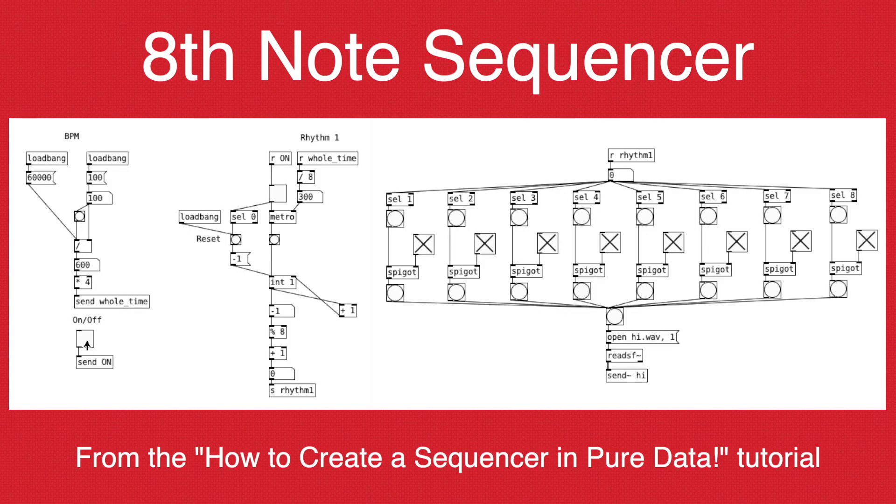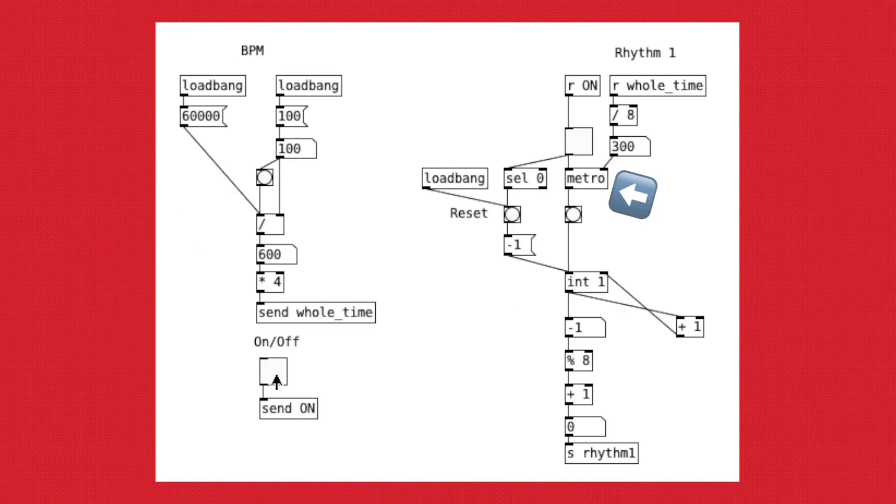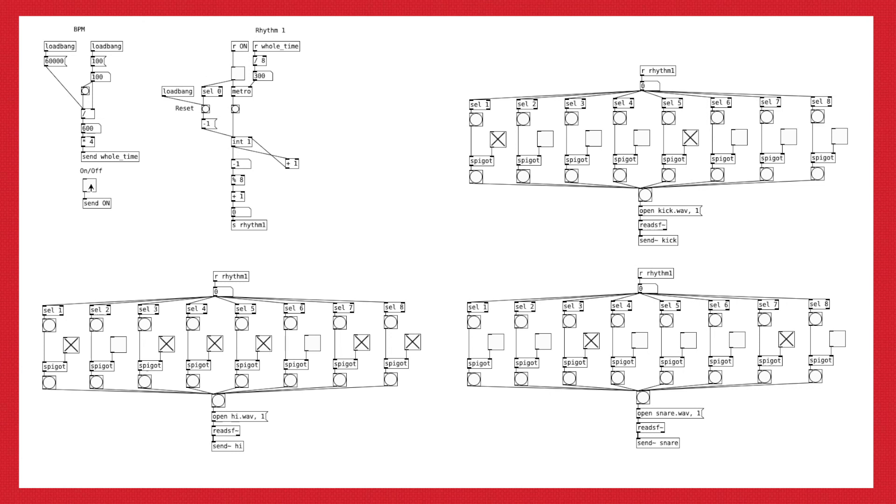In this previous tutorial, we made a musical sequencer. And we use it to create an 8th note pattern. Let's quickly review this patcher. We have a metro object right here and it's connected to a counter algorithm. So for every 8th note time interval, we increment by 1. And we're using a modulo right here so that the counter goes from 1 to 8 and it keeps on repeating forever.